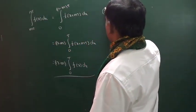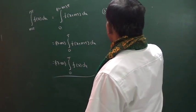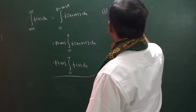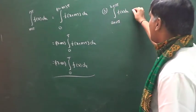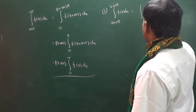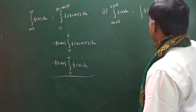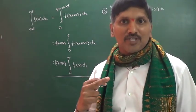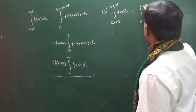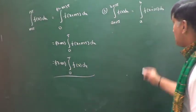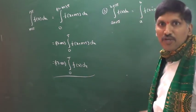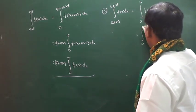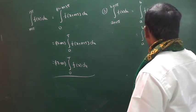The third property: the integral from a+nt to b+nt of f(x)dx. We write f(x+nt) in place of f(x) and subtract nt from both limits, giving the integral from a to b of f(x+nt)dx. By the definition of a periodic function, f(x+nt) = f(x), so this equals the integral from a to b of f(x)dx.